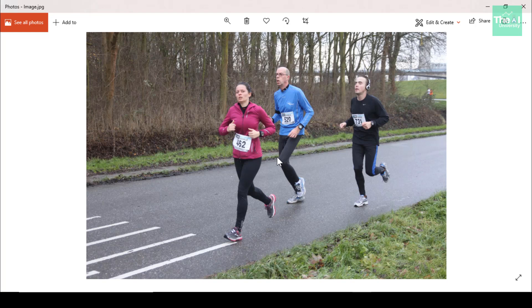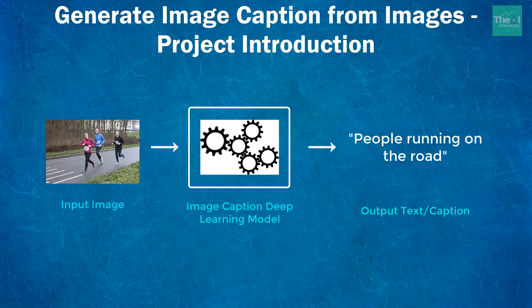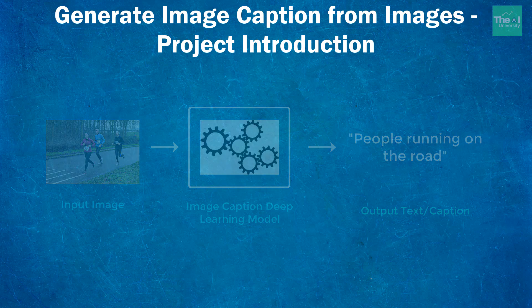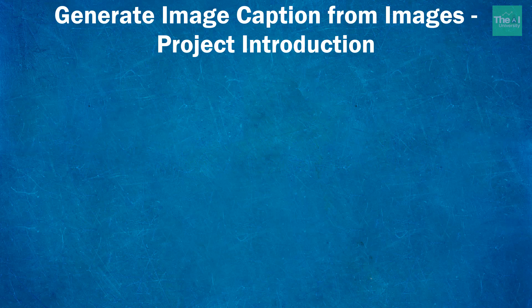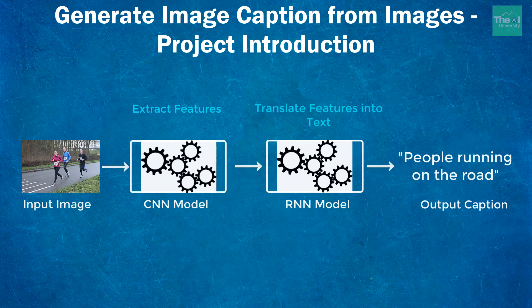Our brain is so much trained and advanced that it can describe a picture almost accurately, but the same was not the case with machines prior to the development of neural networks. Image captioning is the technique of automatically generating a textual description of a given image. It is a multi-modal technique because it involves both convolutional neural networks and recurrent neural networks. CNNs extract features from the image, and RNNs translate those features into a sentence in text form.